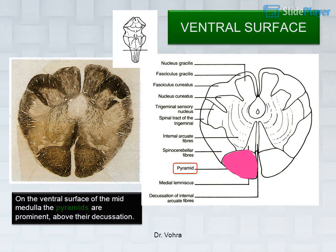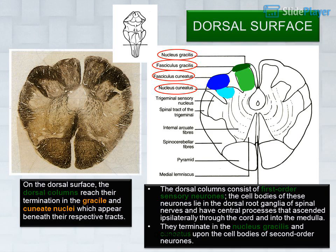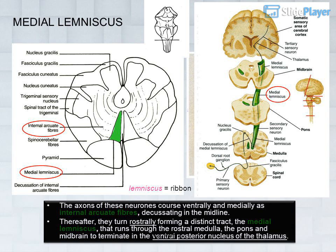On the ventral surface of the mid-medulla, the pyramids are prominent above their decussation. On the dorsal surface, the dorsal columns reach their termination in the gracile and cuneate nuclei, which appear beneath their respective tracts. The dorsal columns consist of first-order sensory neurons whose cell bodies lie in the dorsal root ganglia of spinal nerves, with central processes that ascend ipsilaterally through the cord and into the medulla.